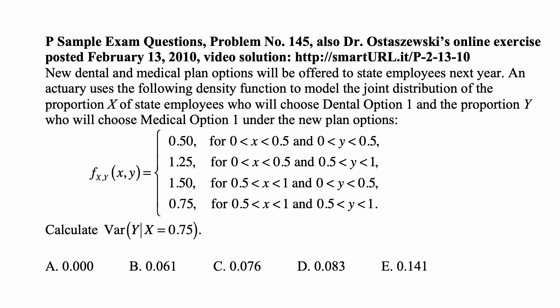f_XY(x,y) equals 0.50 for 0 < x < 0.5 and 0 < y < 0.5; 1.25 for 0 < x < 0.5 and 0.5 < y < 1; 1.50 for 0.5 < x < 1 and 0 < y < 0.5; and 0.75 for 0.5 < x < 1 and 0.5 < y < 1.